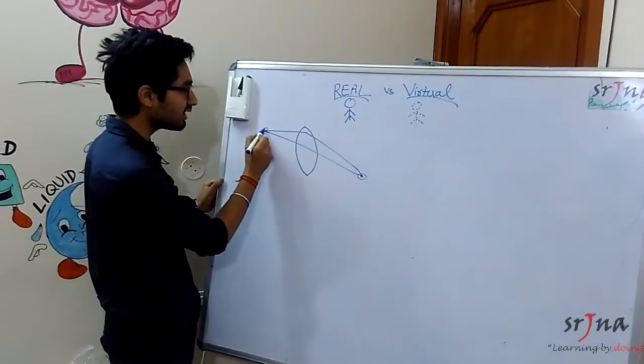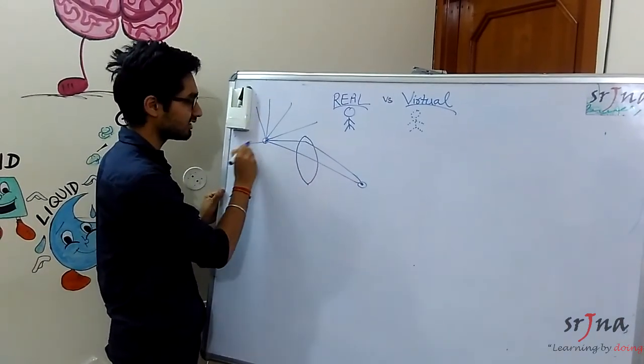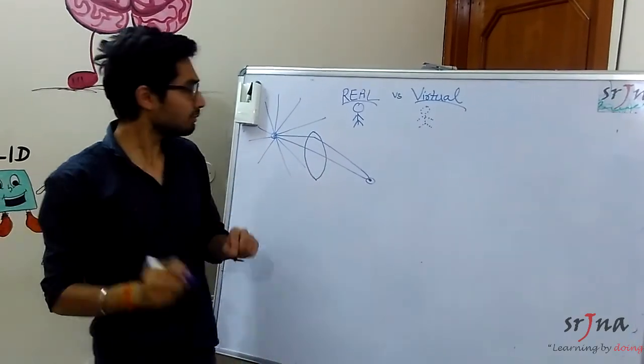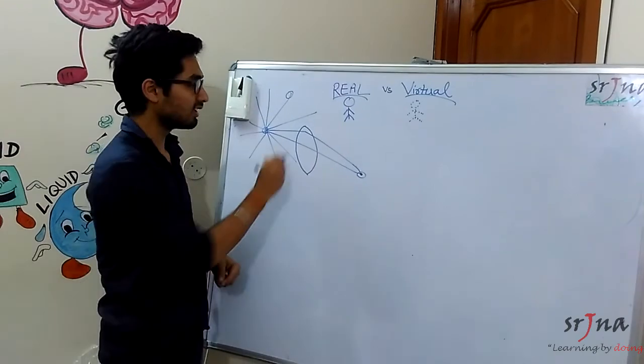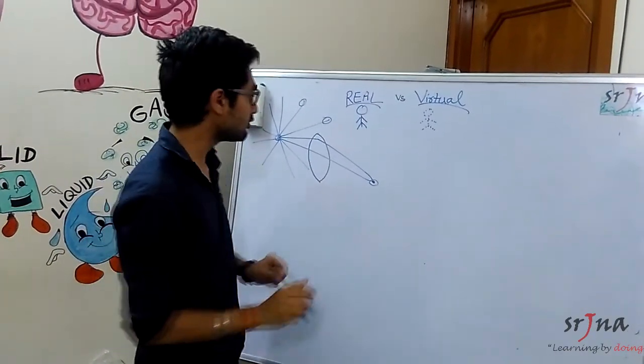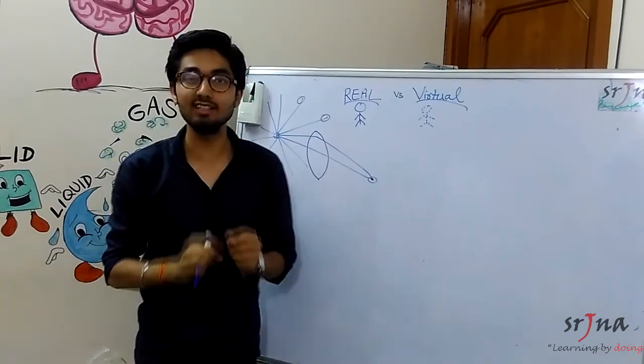Actually what is happening is let's say this is a light bulb. So light is being emitted in all the possible directions. So that doesn't mean that here no image is formed and image is only formed here. This is actually a misconception. Actually images are formed at all the points wherever there is light.